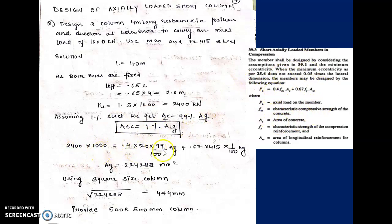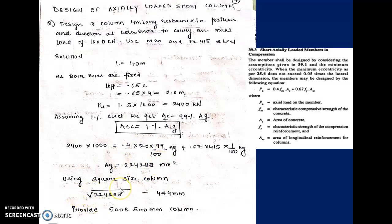Substituting Pu = 2400×1000 N, 0.4×fck = 0.4×20, with 99% of gross area as concrete area, and 0.67×fy×415 with 1% of gross area as steel area, we find the gross area is 224,288 mm². Going for a square column, taking the square root gives approximately 474 mm for one lateral dimension. We round this up to 500 mm, so the column section is 500×500 mm.